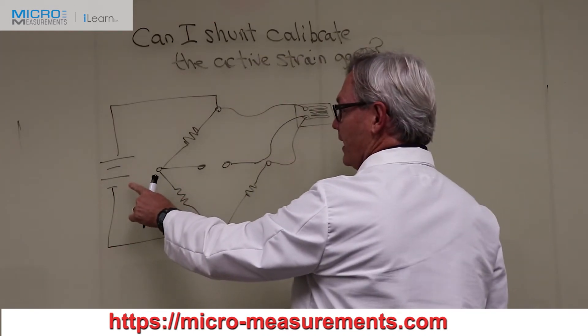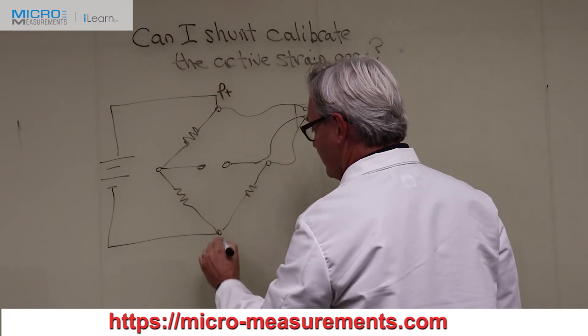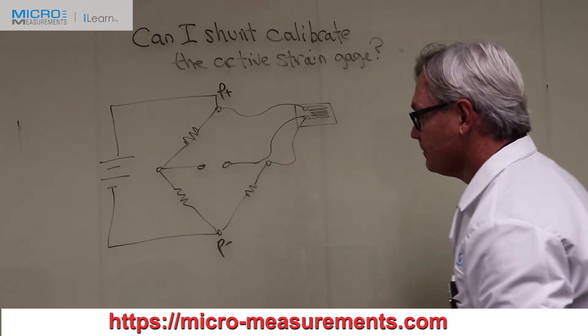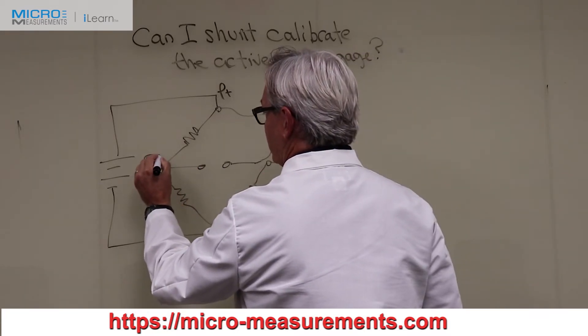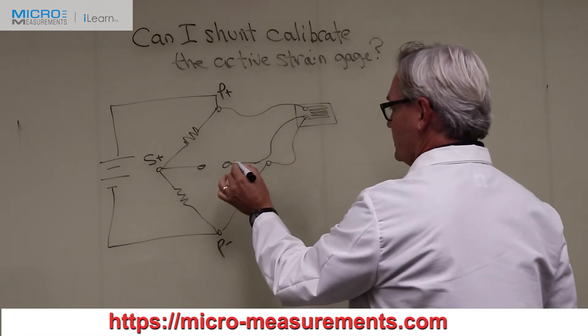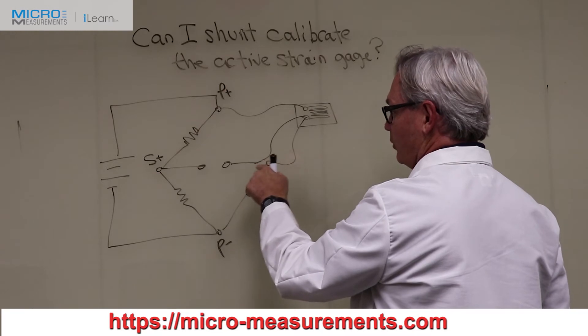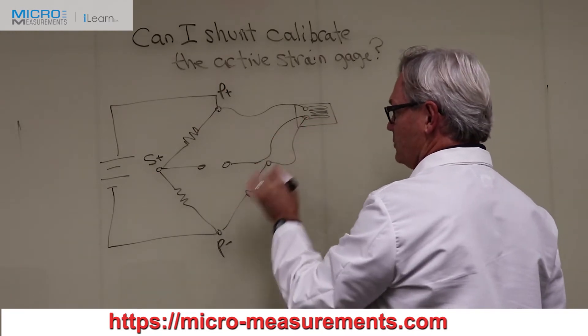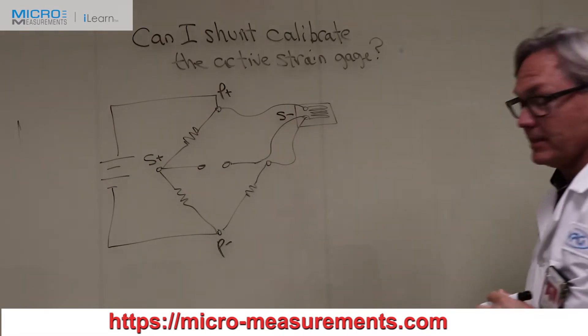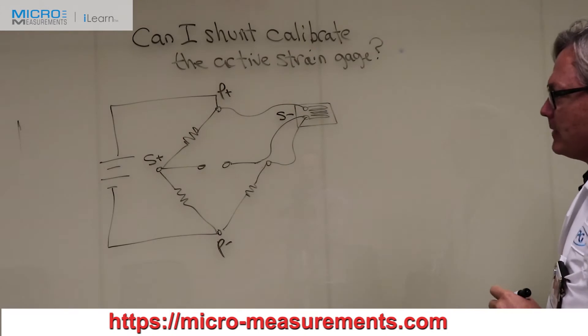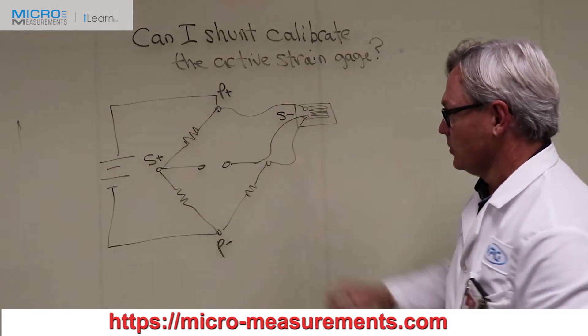So I've got the symbol for a battery. And if I label the corners of the bridge, I've got P plus at the top, P minus at the bottom. Then I'm going to label the signal output connections. This one is going to be S plus. And this one would be S minus. And since I've broken that and pushed that wire out to the tab of the strain gauge, technically the S minus connection or signal minus is out at the tab of the gauge. So we've got strain gauge. We've got three wires coming into the circuit.